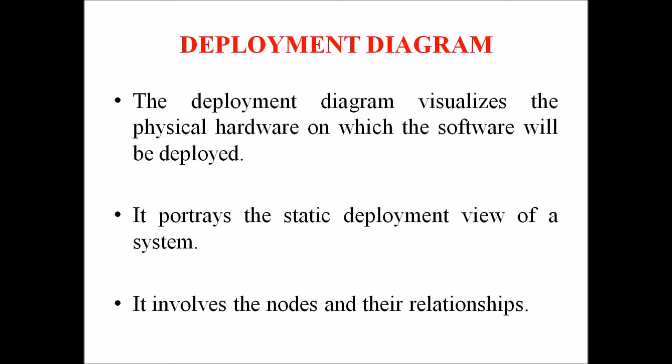In this lecture, we have discussed what is a deployment diagram. A deployment diagram visualizes the physical hardware on which the software is deployed. This UML deployment diagram portrays the static deployment view of a system and involves nodes and their relationships. The deployment diagram ascertains how software is deployed on hardware and maps the software architecture to the physical system architecture where the software will be executed as a node. Since it involves many nodes, the relationship is shown by utilizing the communication path.